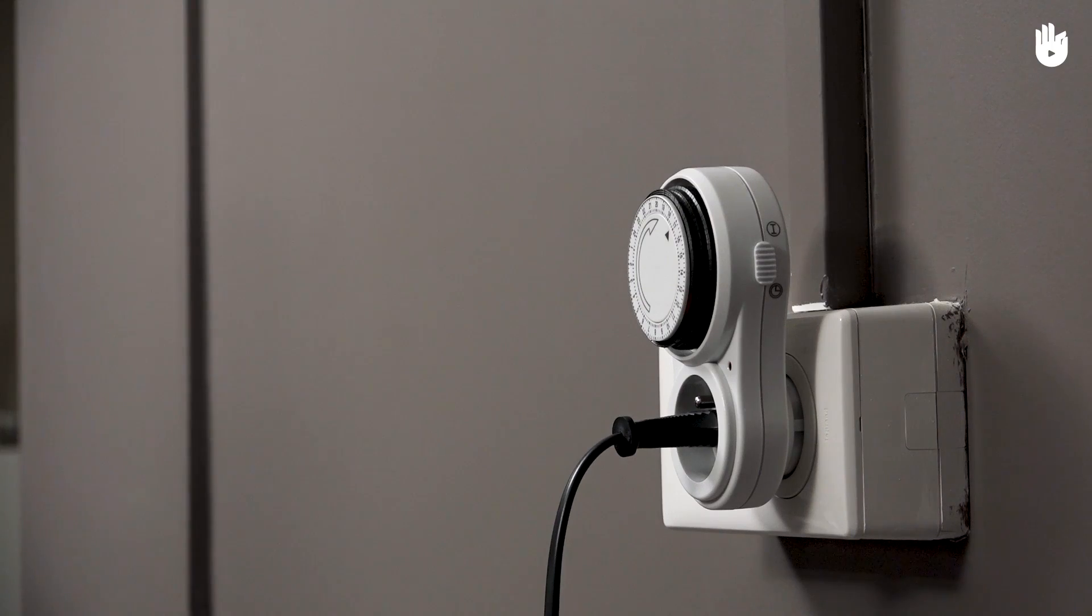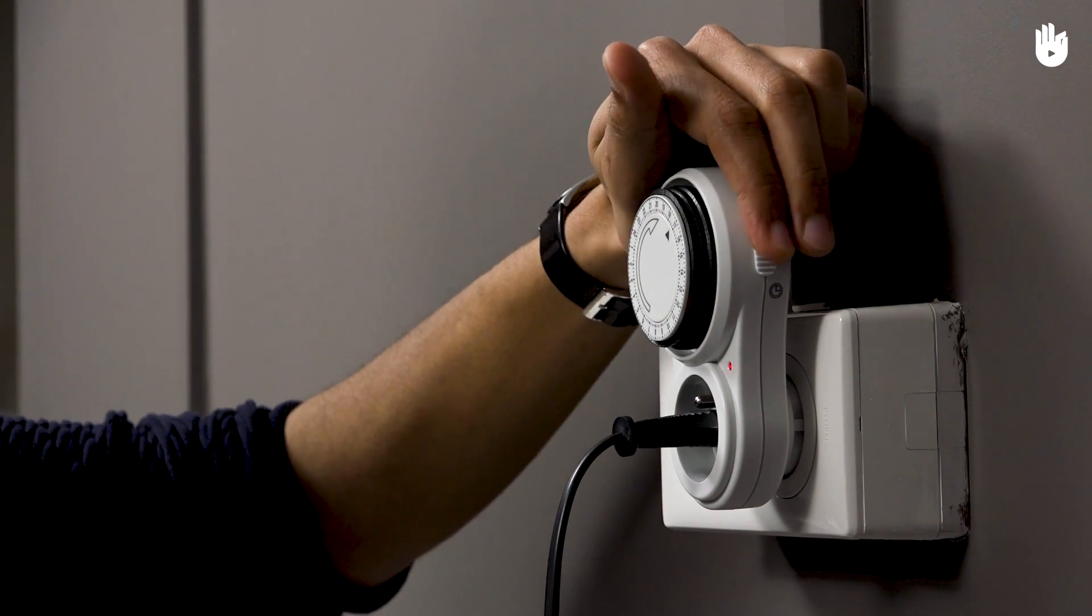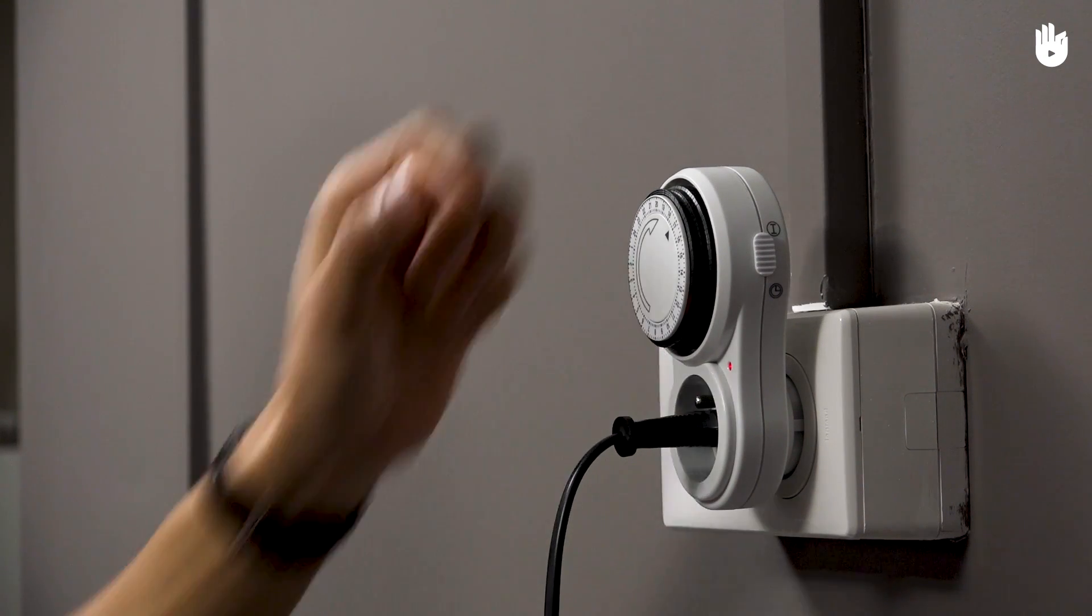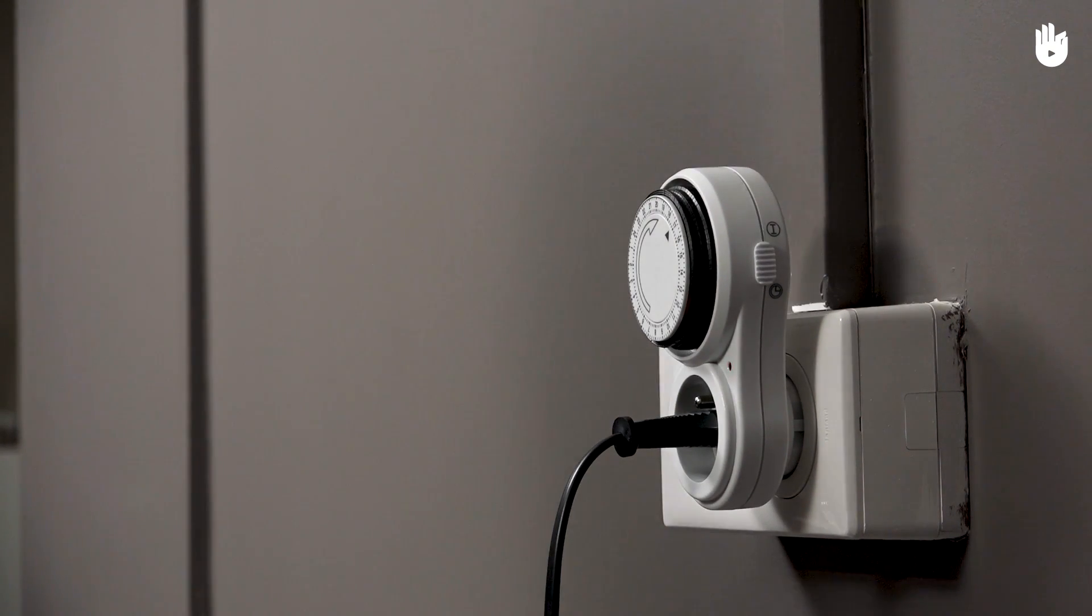By using the switch located to one side of the timer towards the top, you can opt to override the schedule and power your device continually. When lowered, the plug will switch back to your preset schedule.